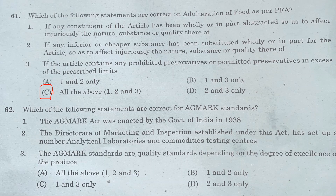Question 62: Which of the following statements are correct for ACMARC standards? Statement 1: the ACMARC Act was enacted by the Government of India in 1938. Statement 2: the Directorate of Marketing and Inspection established under this Act has set up a number of analytical laboratories and Commodities Testing Centers. Statement 3: the ACMARC standards are quality standards depending on the degree of excellence of the produce. Option A: all of the above. Option B: 1 and 2 only. Option C: 1 and 3 only. Option D: 2 and 3 only. Answer is Option D, 2 and 3 only.